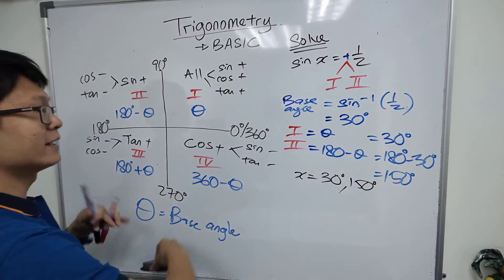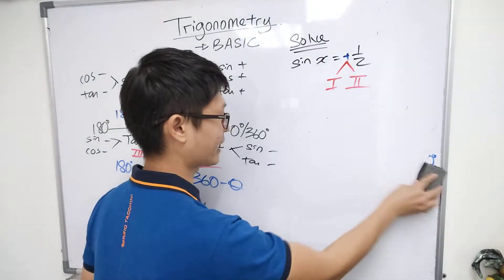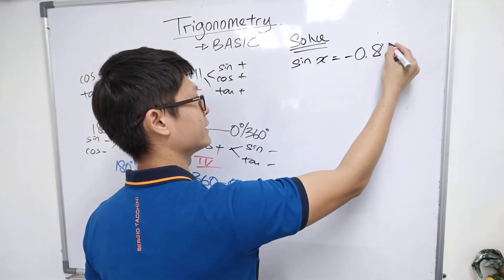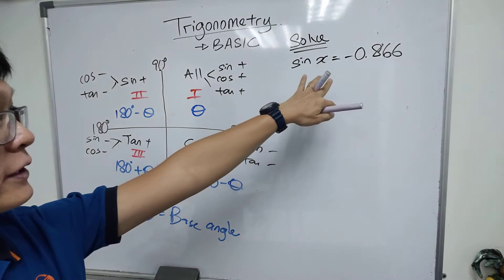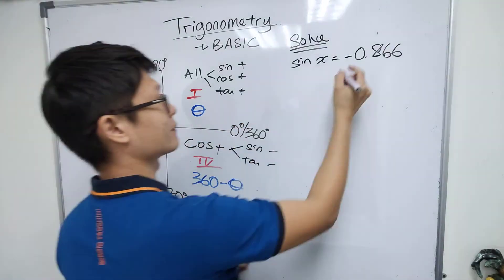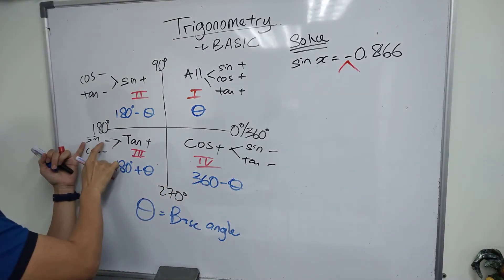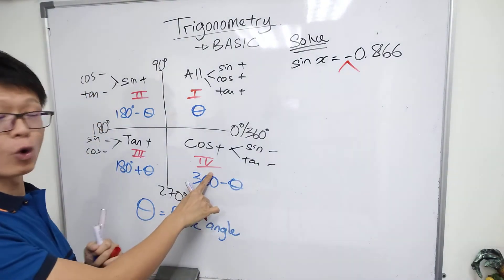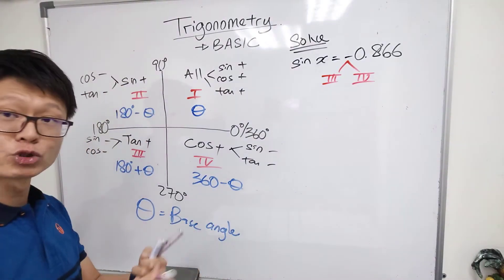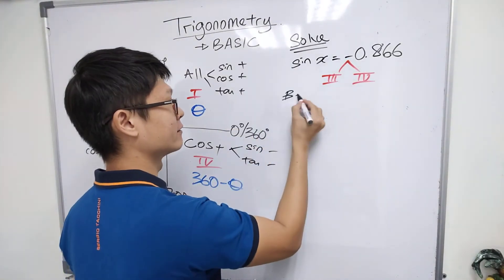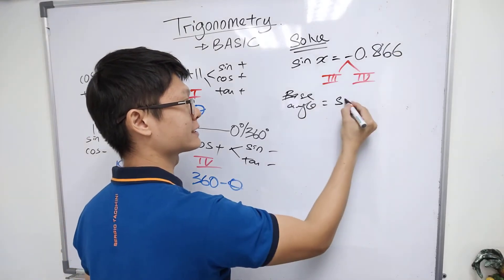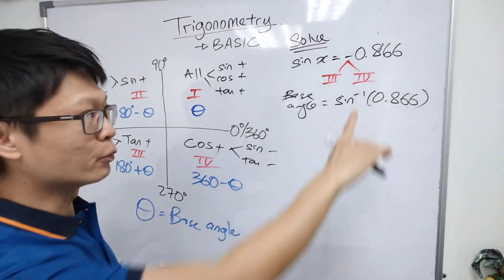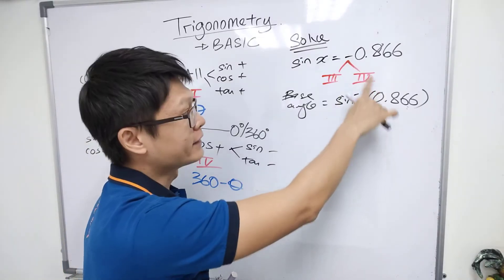Let's change the question — now it's negative 0.866. If the value is negative, sine negative is in quadrant three and quadrant four. So identify quadrant three and quadrant four. Then do the same thing — find the base angle by throwing the sine over: you get sine inverse of 0.866.